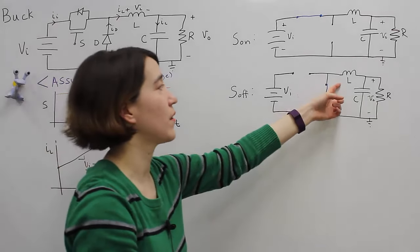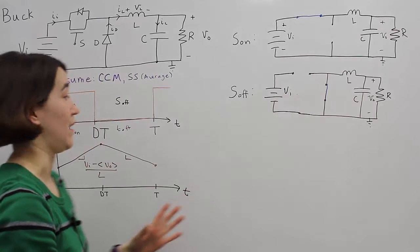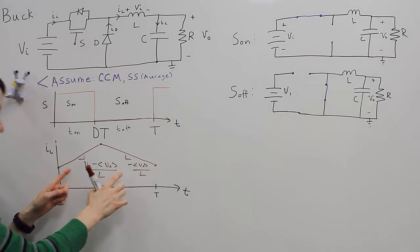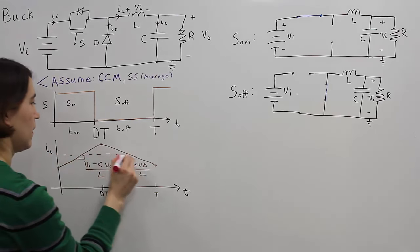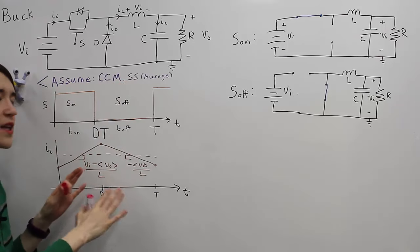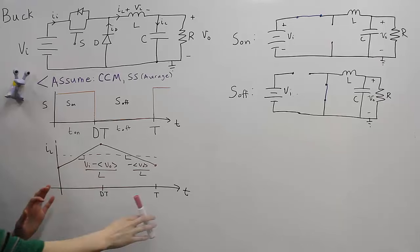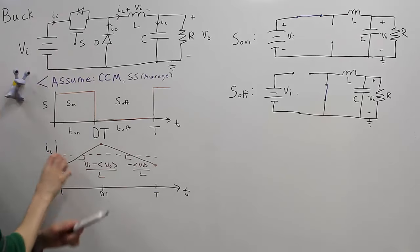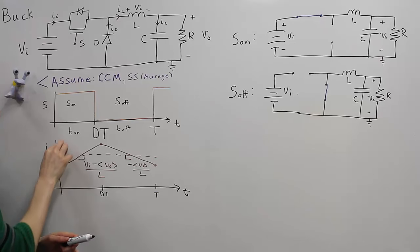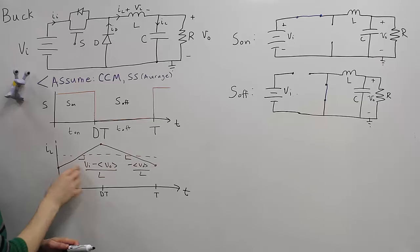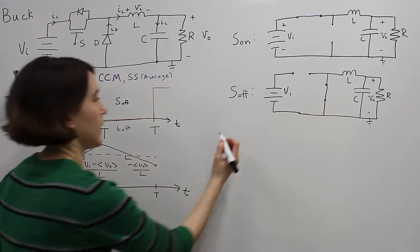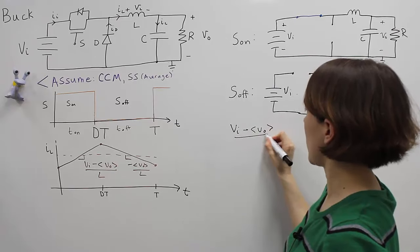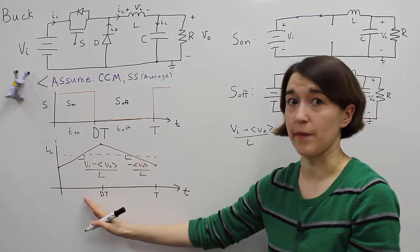Looking at the volt-second balance equation: during the on period, the inductor current increases by the slope (V_in − ⟨V_out⟩) / L multiplied by the on-time D·T. We want to write this rise equal to the drop during the off period. Taking the negative of the downward slope, we get ⟨V_out⟩ / L, multiplied by the off-time, which we rewrite as (1 − D)·T.